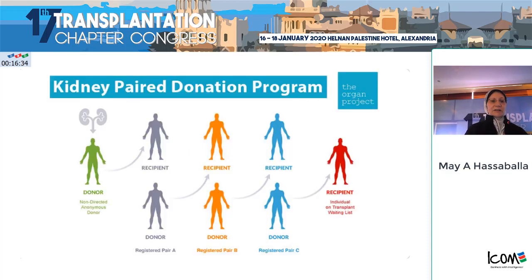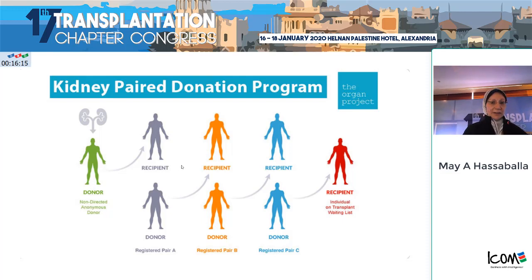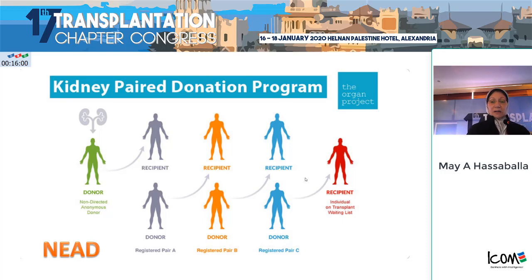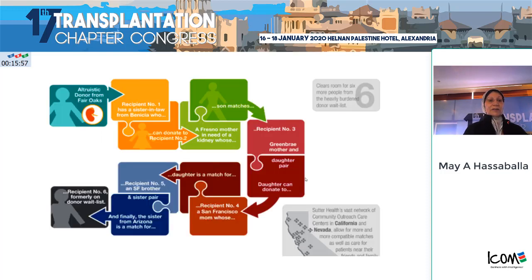On the other hand, if you have an altruistic donor or a non-directed donor — someone who wants to donate to somebody he doesn't know just to improve the quality of that person's life — this donor gives to one recipient, then the donor of that recipient gives to another, and so on. This is called the never-ending altruistic donor chain. It can only end when one of the donors gives the kidney to a patient on the waitlist, usually one of the hard-to-match recipients. One altruistic donor can help many patients get transplanted.